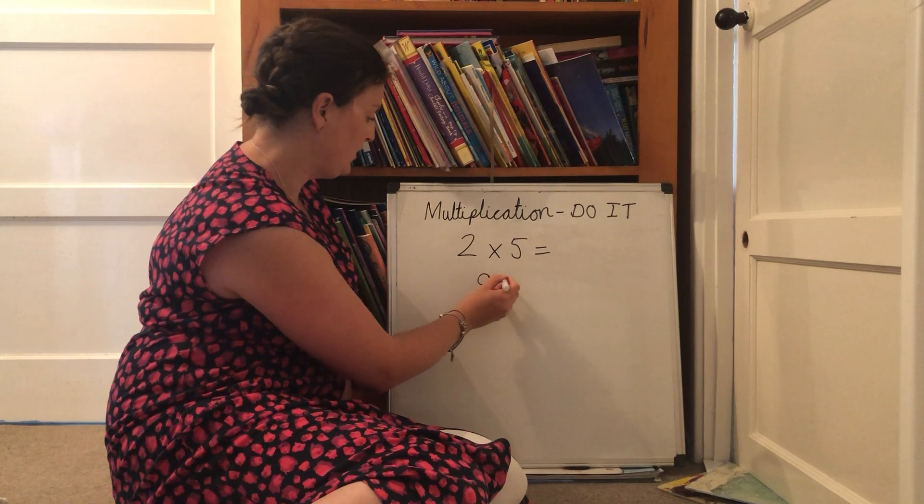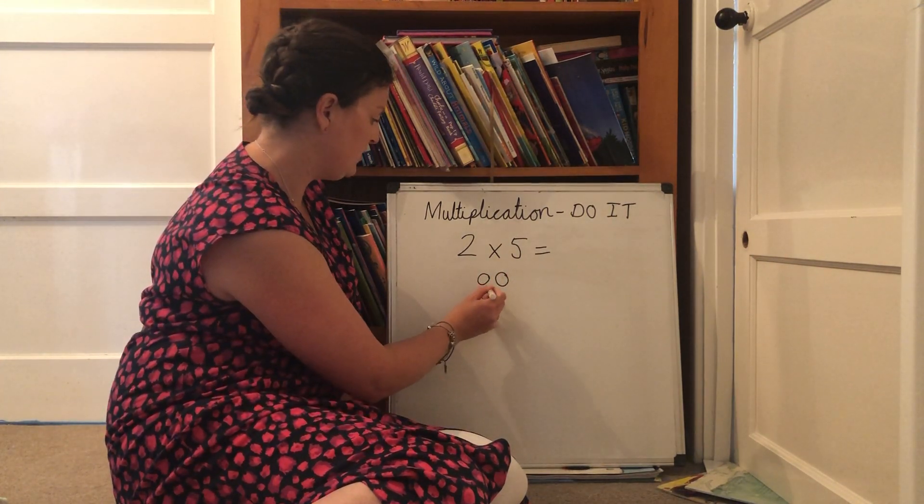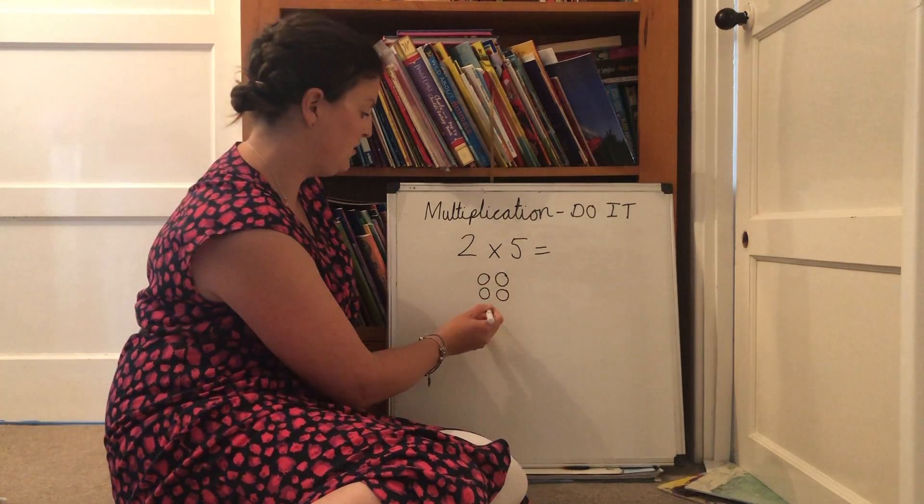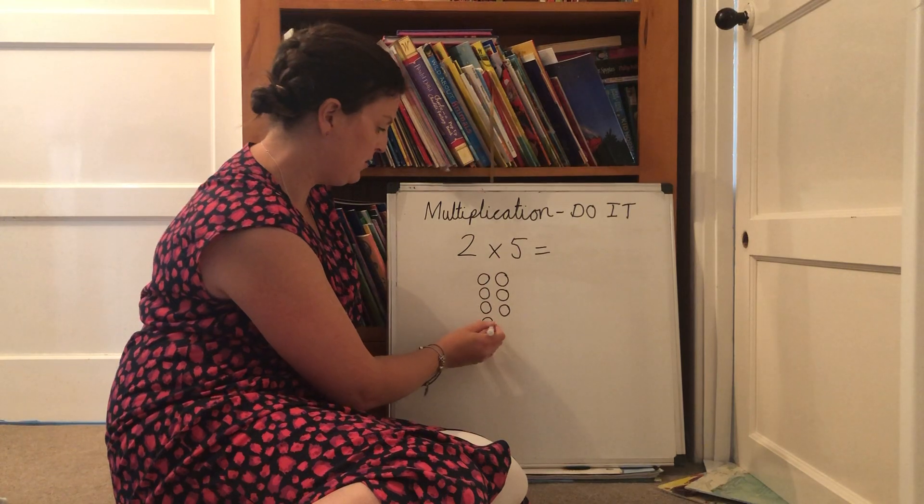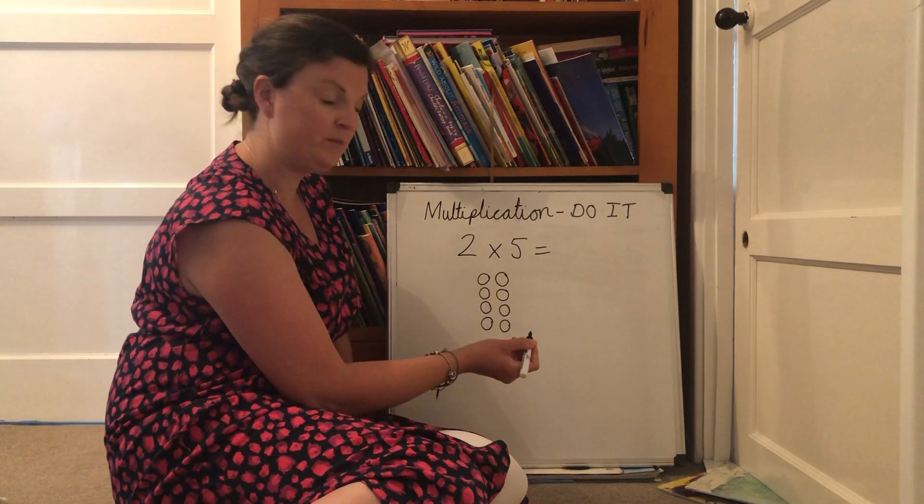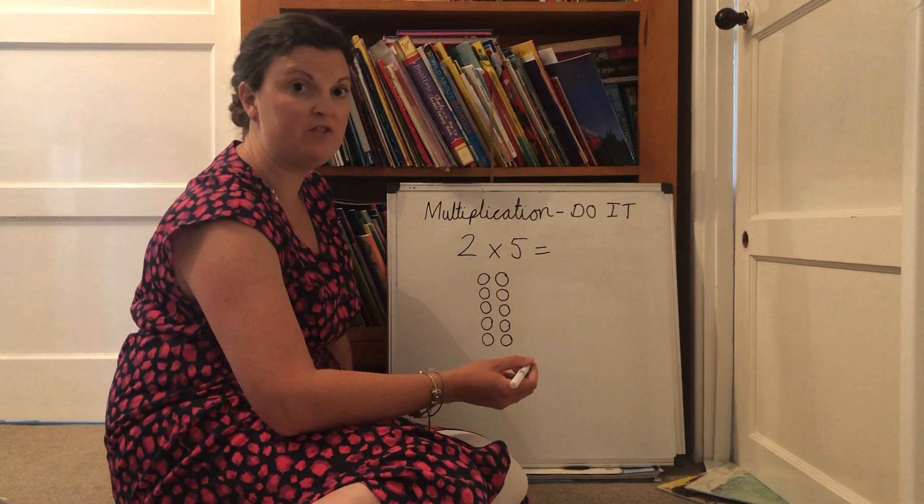So that's one group of two, two groups of two, three groups of two, four groups of two